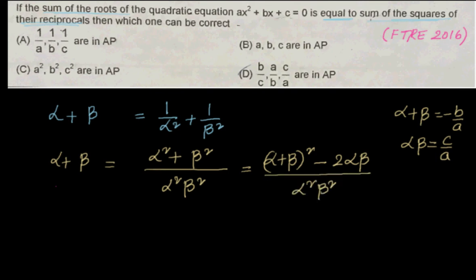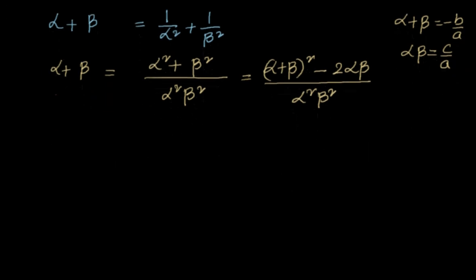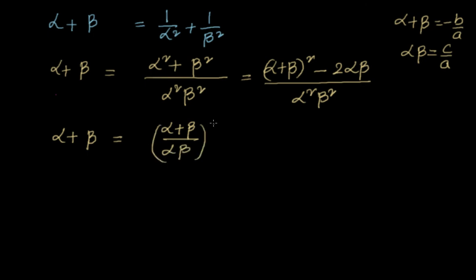We can separate the terms and rewrite this as: α + β = [(α + β)/αβ]² − 2/αβ.